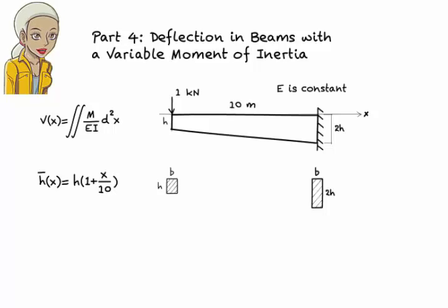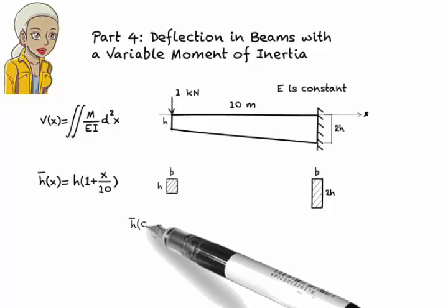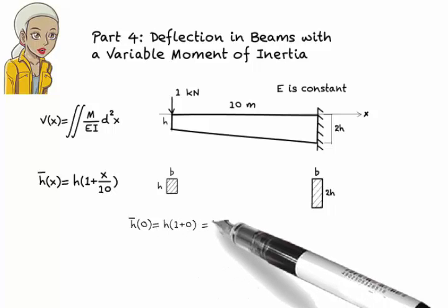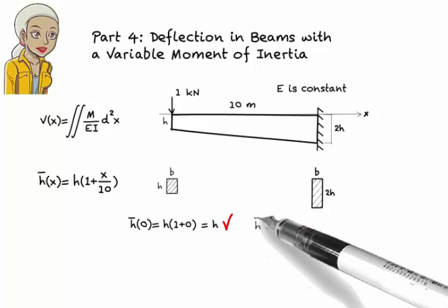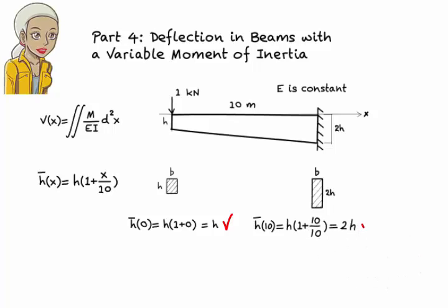Let's see if the function indeed generates the correct values. So if we substitute 0 for x, we should get h. Check. If we substitute 10 for x, we should get 2h. Check.